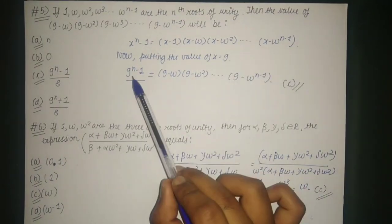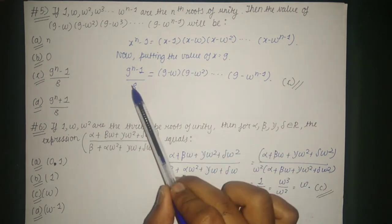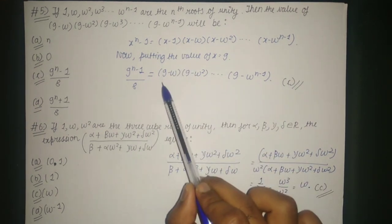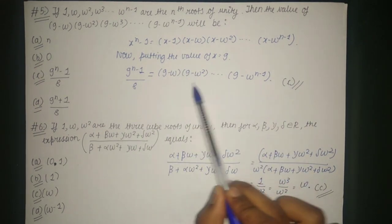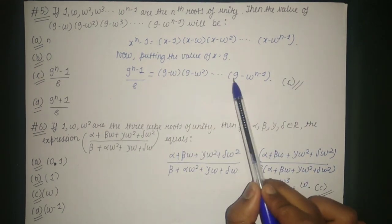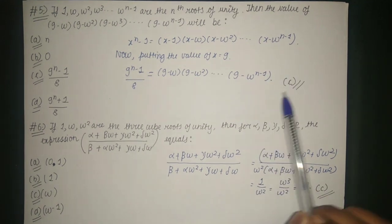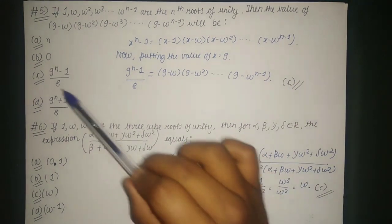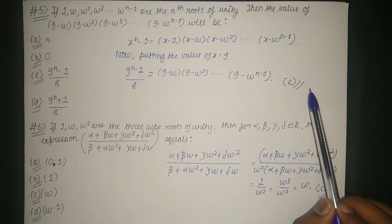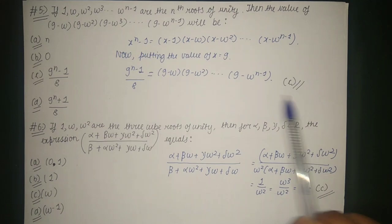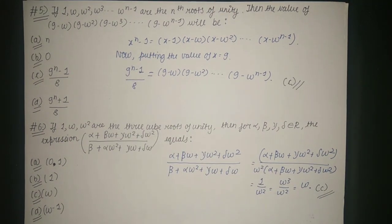After substituting x = 9, we get (9^n - 1)/8 = (9 - ω)(9 - ω²)...(9 - ω^(n-1)). This matches option C, so the correct answer is option C: (9^n - 1)/8.